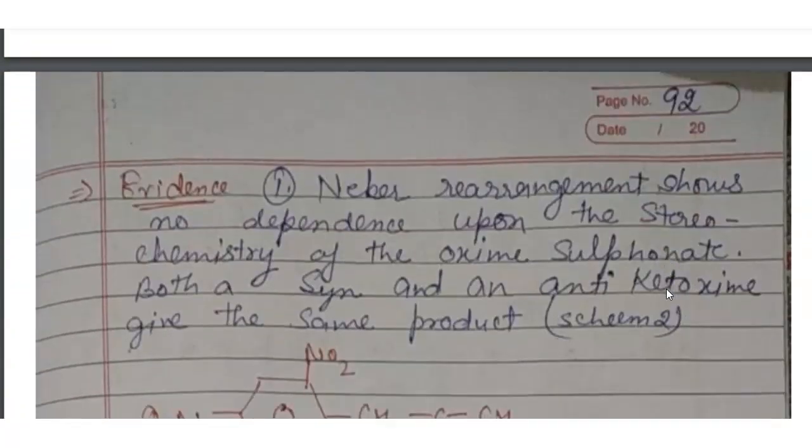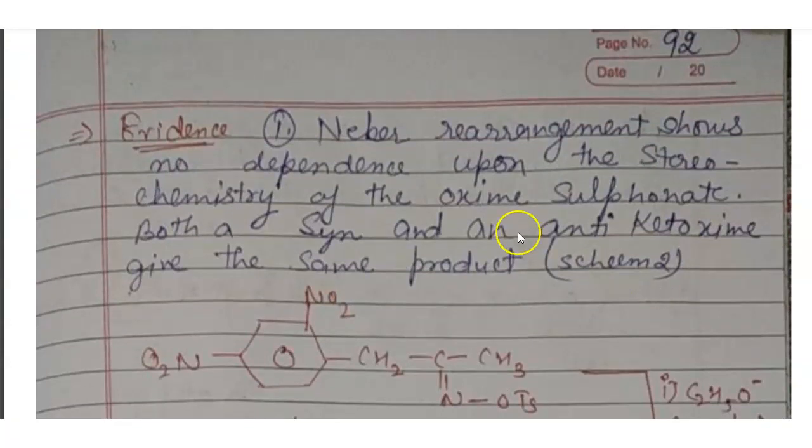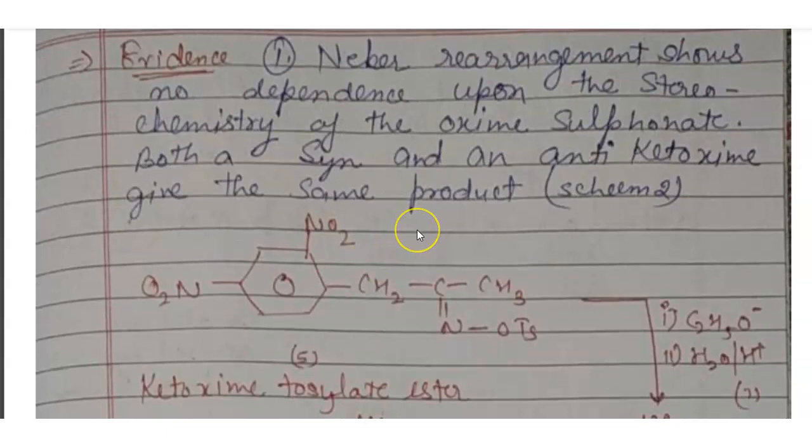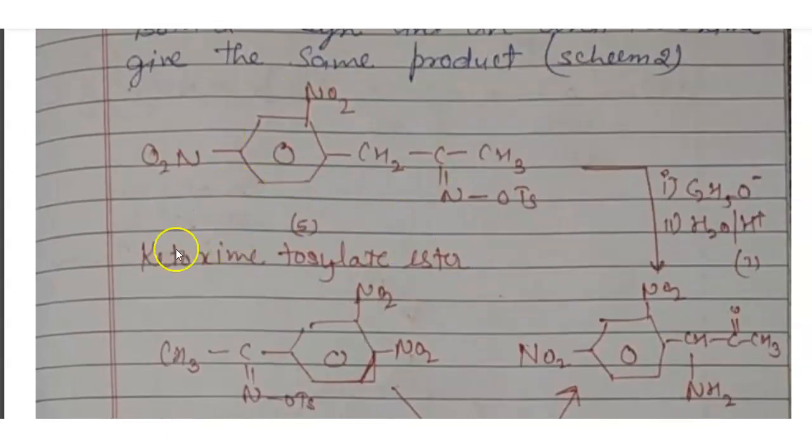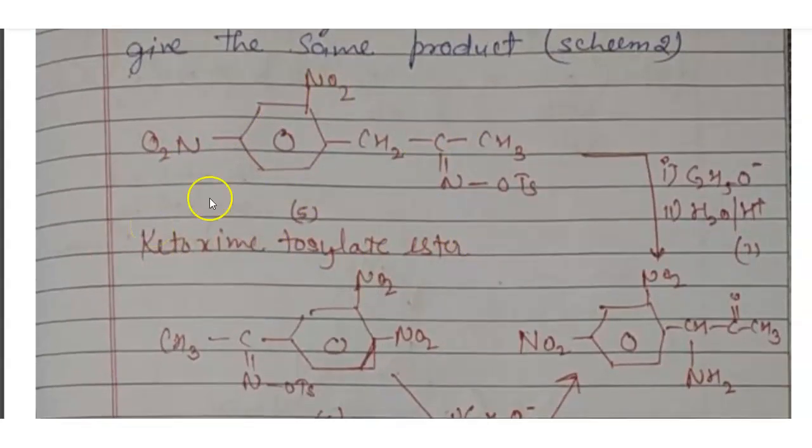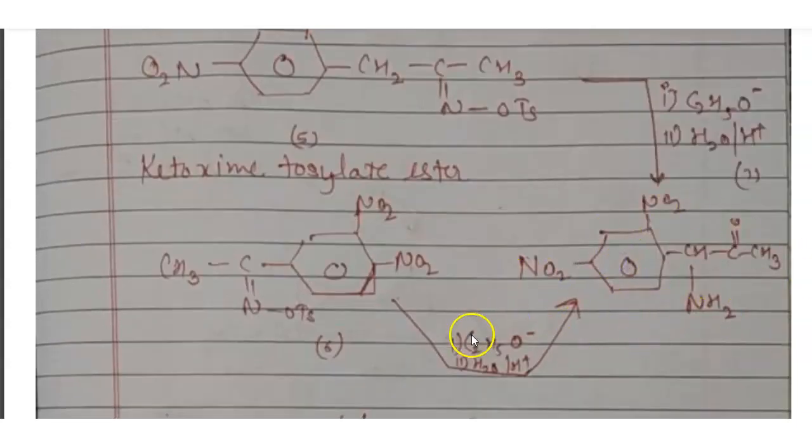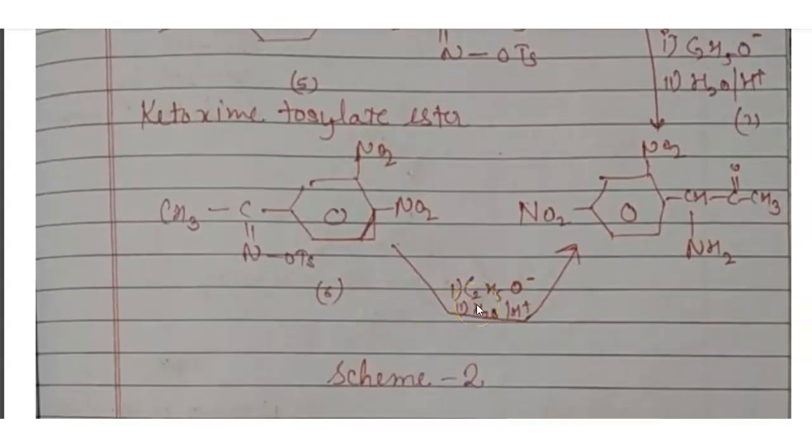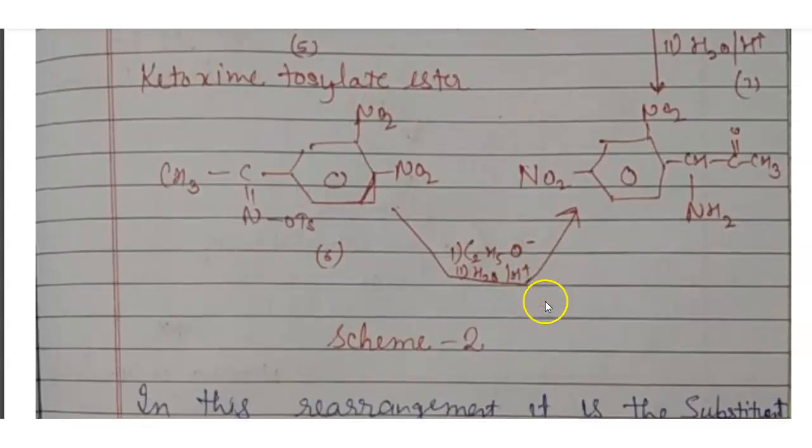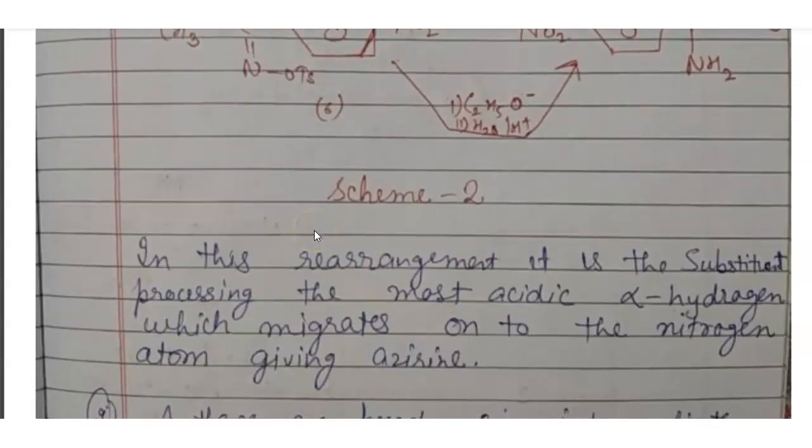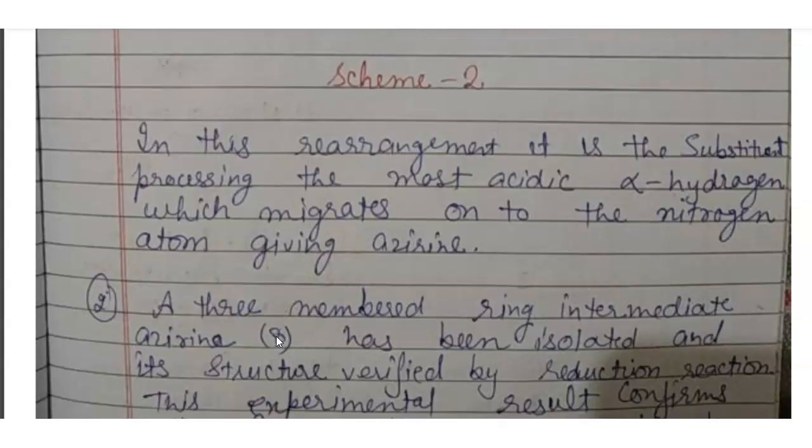And this is the last evidence of this Neber rearrangement. First, Neber rearrangement shows no dependence upon the stereochemistry of the oxime sulphonate. Both syn and anti ketoxime give the same product. For example, here is a reaction. Ketoxime tosylate ester to form this compound and here presence of ethanol and water to form this. In this rearrangement, it is the substituent possessing the most acidic alpha-hydrogen which migrates on the nitrogen atom giving azirine.